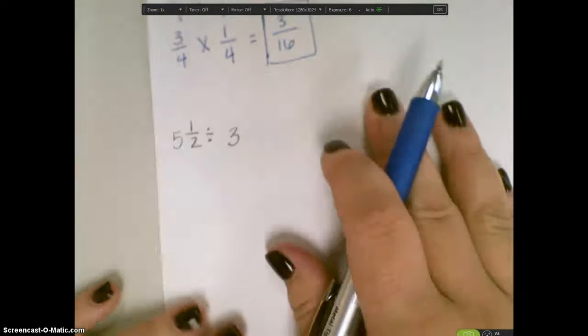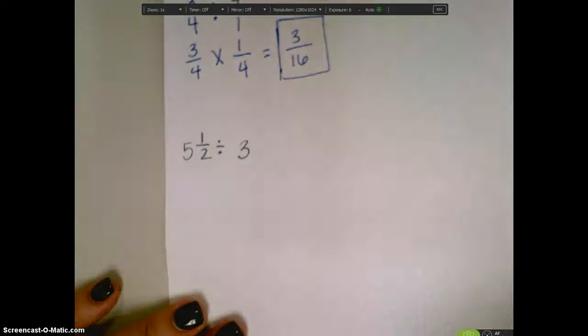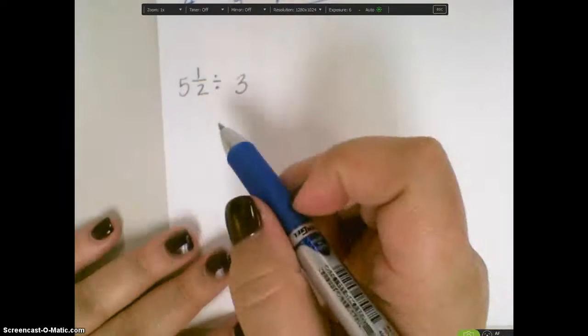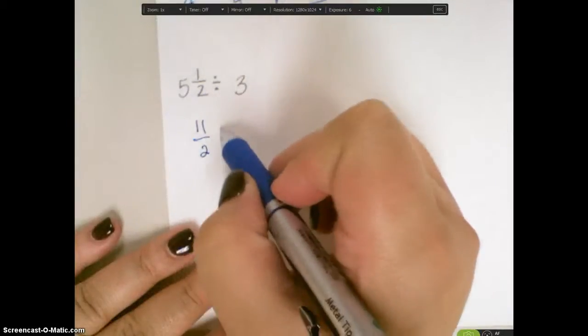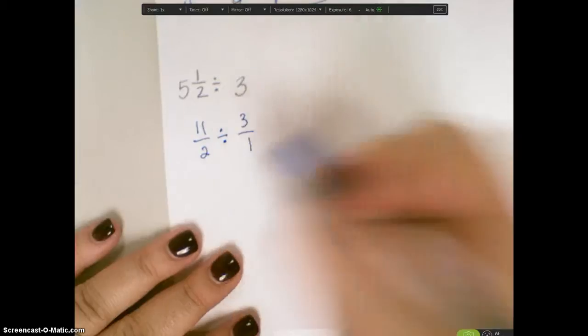And finally, to do a mixed number, much like with multiplication, I can't multiply this unless it is an improper fraction. So this is going to become 11 over 2 divided by, I need this to be 3 over 1.